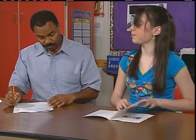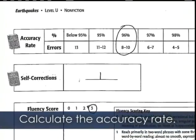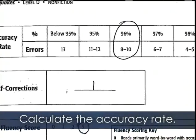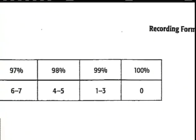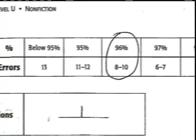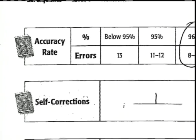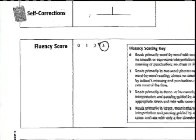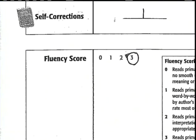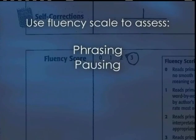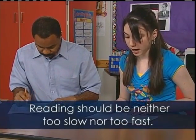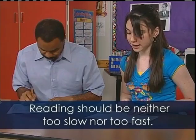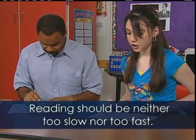After the student has finished the oral reading, calculate the accuracy rate. This is important because it will give you the first indicator of whether the text is easy, just right for instruction, or too hard for the reader. Use the fluency scale to assess how the reader uses phrasing, pausing, intonation, and word stress. Reading rate is also a factor here, but remember that the reading should be neither too slow nor too fast.